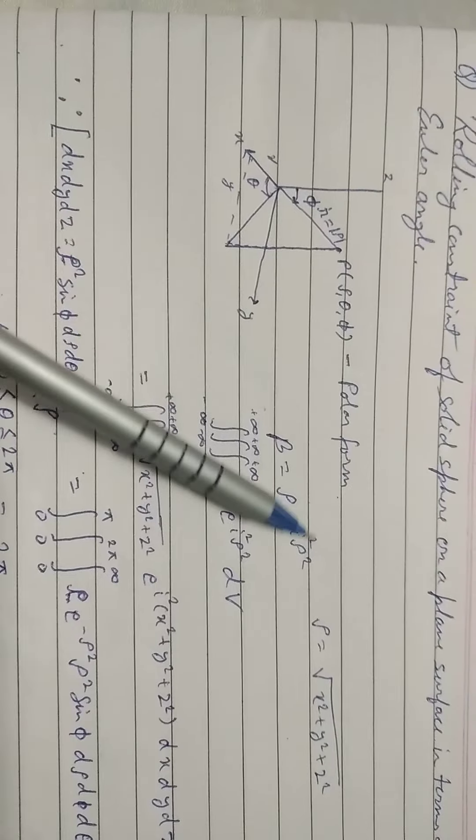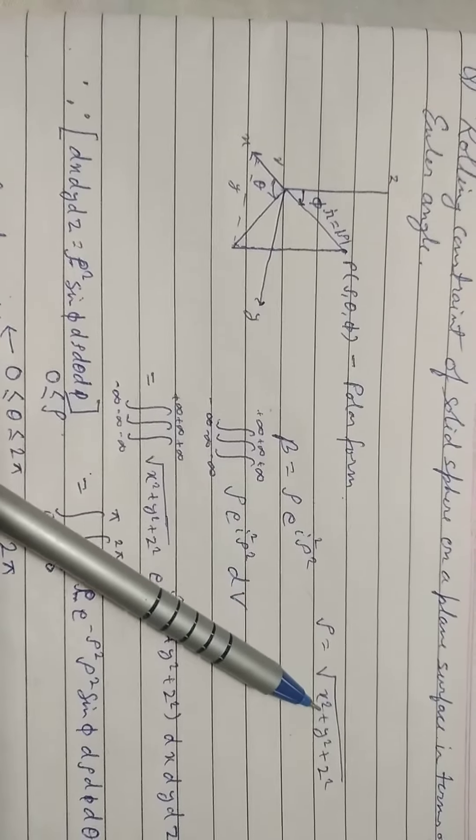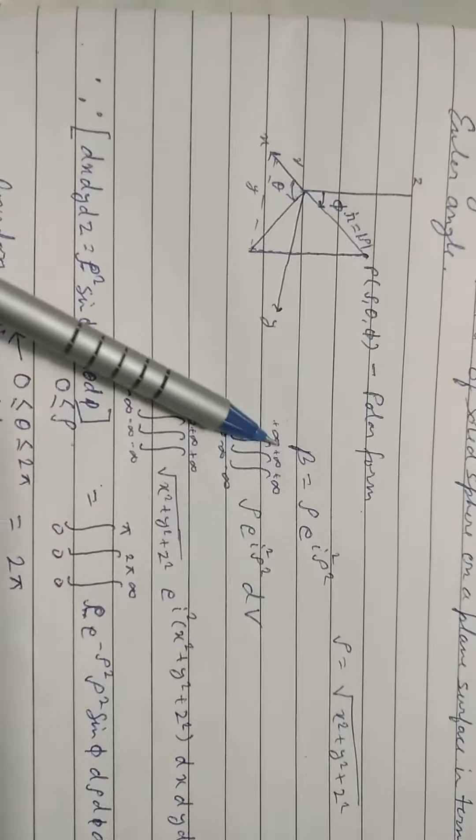It is written in the polar form, where rho is equal to root under x square plus y square plus z square. Beta is equal to rho e to the i square p square.